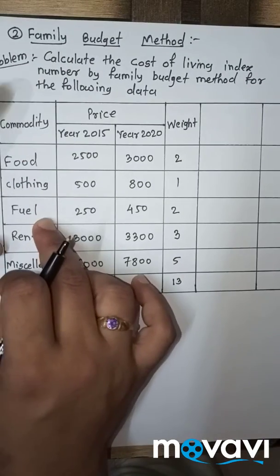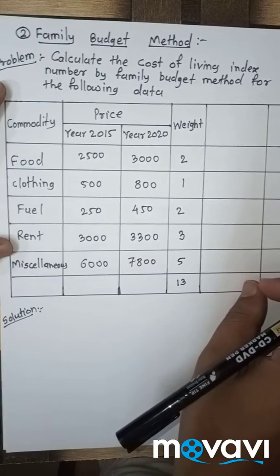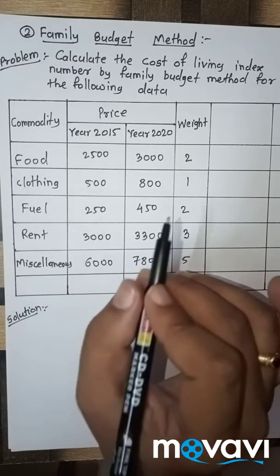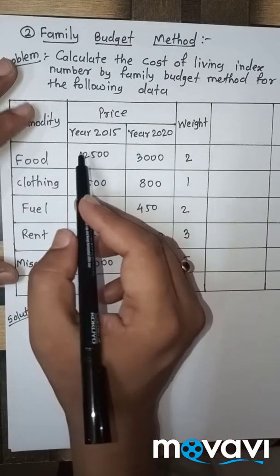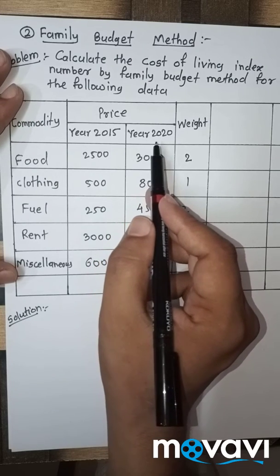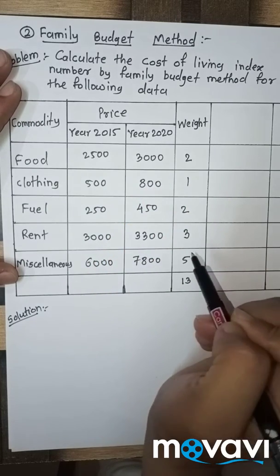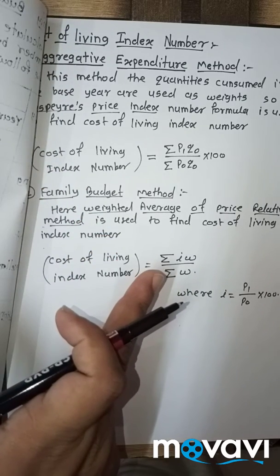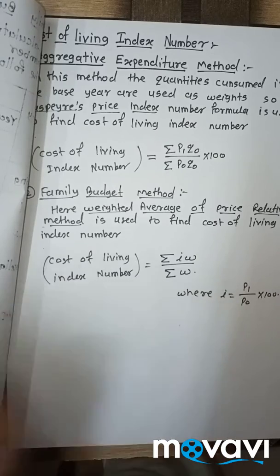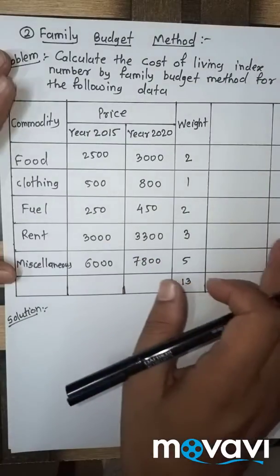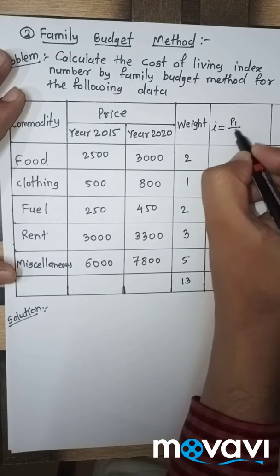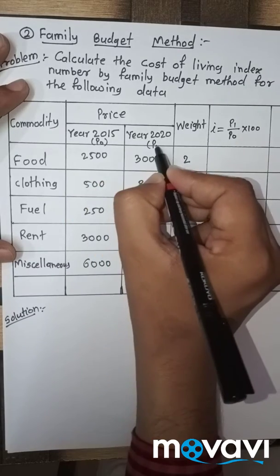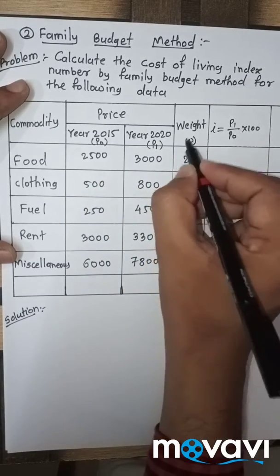Then we take one problem. Suppose we have given this problem: Calculate the cost of living index number by family budget method for the following data. Commodities food, clothing, fuel, rent, and miscellaneous are given. Base year price for year 2015 is given, current year price for year 2020 is given, and corresponding weights are given. Our formula to find cost of living index number by family budget method is summation IW upon summation W, where I equals P1 upon P0 into 100. First we find the value of I, and then IW.